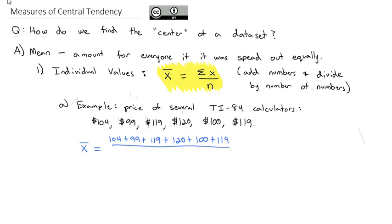Then we'll divide by the number of numbers. And if I count them, there's 1, 2, 3, 4, 5, 6 calculators. Now as I do this on my calculator, to avoid an order of operations error, I'm going to do all the addition first. When I add them all up, I get 661 divided by 6 gives me a total of $110.17. So I could say the average calculator or the middle calculator, the center, is about $110.17.